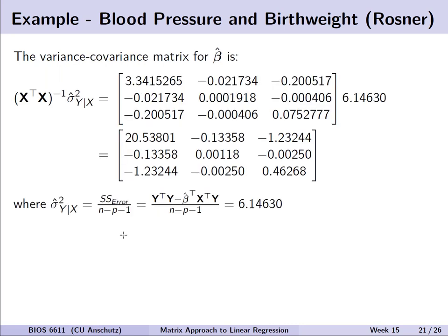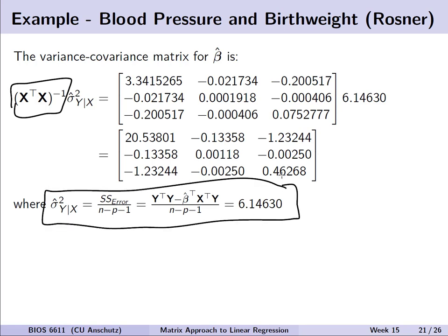To do inference on beta coefficients we need the variance-covariance matrix. It's straightforward once we have the necessary components. We already have X-transpose X inverse, and we re-note the formula for estimated MSE. Since it's a matrix times a scalar, each value is modified by the estimated MSE of 6.1463. We can then note the estimated variance for beta-naught hat (the intercept) is 20.5, and take the square root for the standard error.